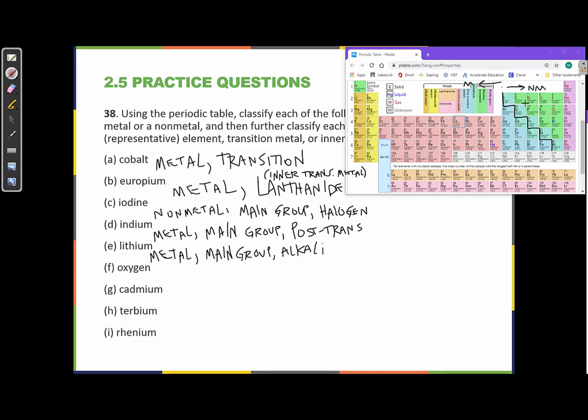Alright, oxygen. Oxygen is over here. One of those few non-metal elements. So, oxygen is non-metal. This is the main group. And this column, these are called chalcogens.